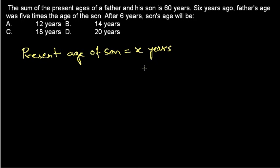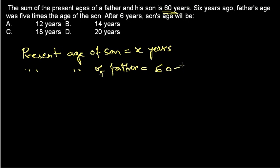If the present age of the son is x years, then what will be the present age of the father? They are providing that the sum of the present ages of father and son is 60 years. So if the son's present age is x years and the sum is 60 years, then the present age of the father will be 60 minus x years — because the sum of both will give you 60.